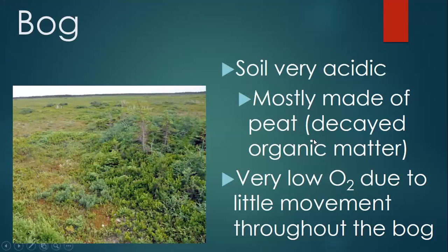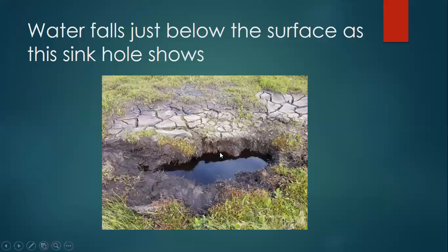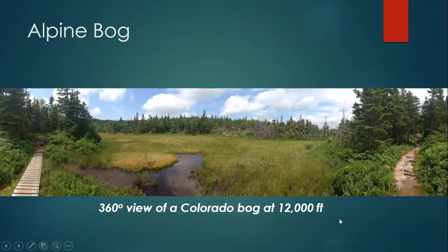Bogs are probably my favorite. They have very acidic soil and very low water movement and low oxygen. Even the plants that look tall in this close-up photograph are actually below knee height — I'm kneeling to take it. Sometimes the land looks like there's no water, but when a sinkhole forms you can see all the groundwater just below the surface. This 360-degree view shows an alpine bog at 12,000 feet — a boardwalk takes you across the actual bog.